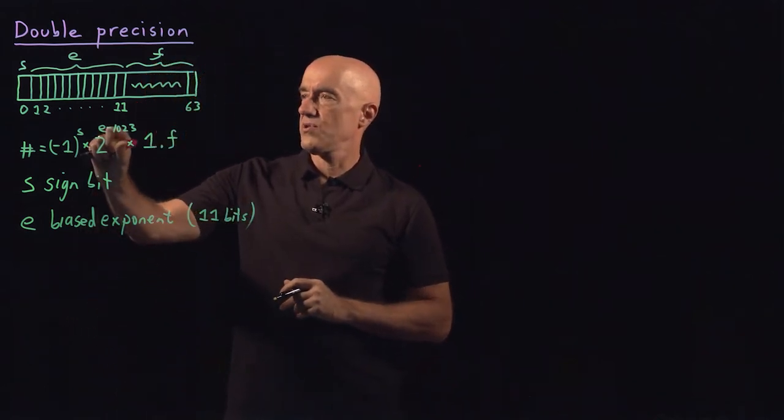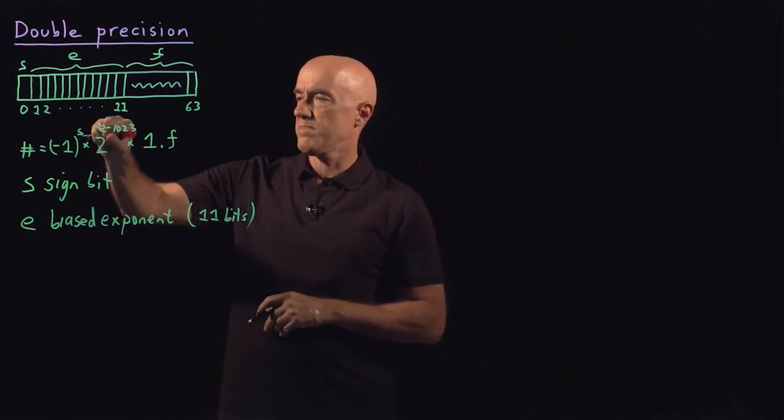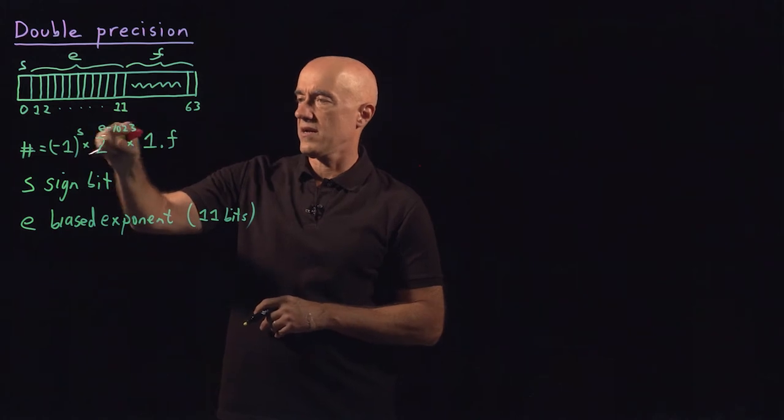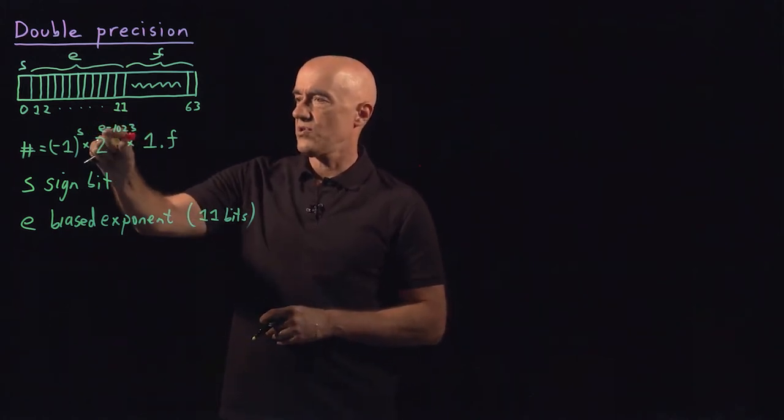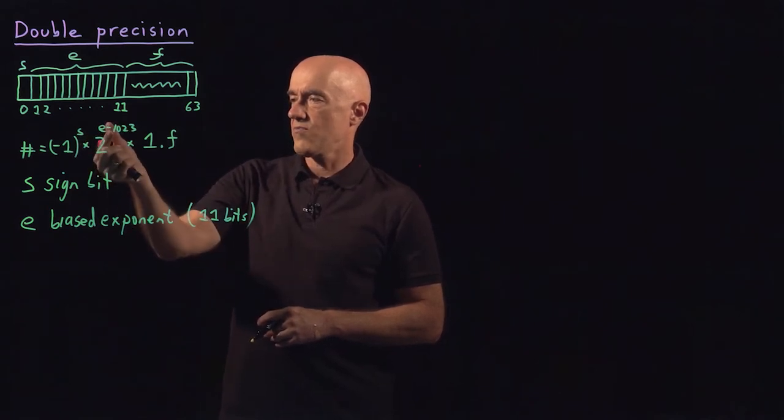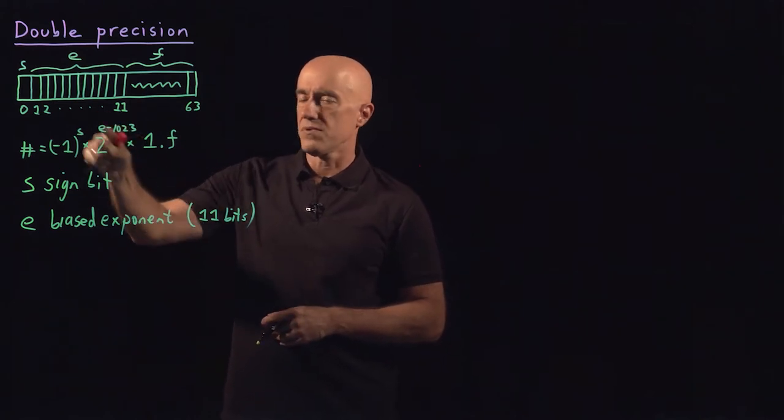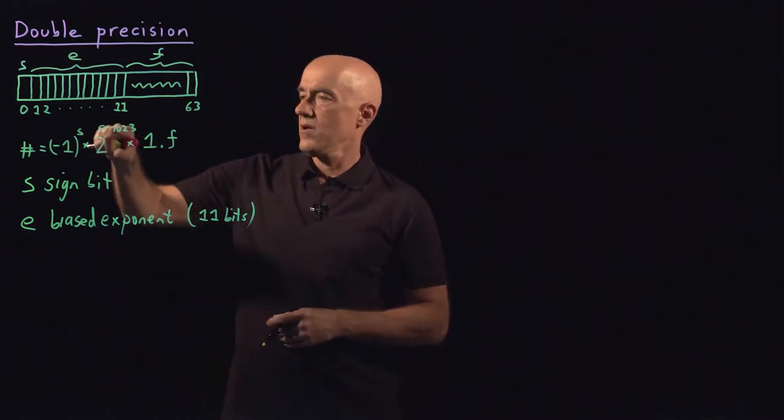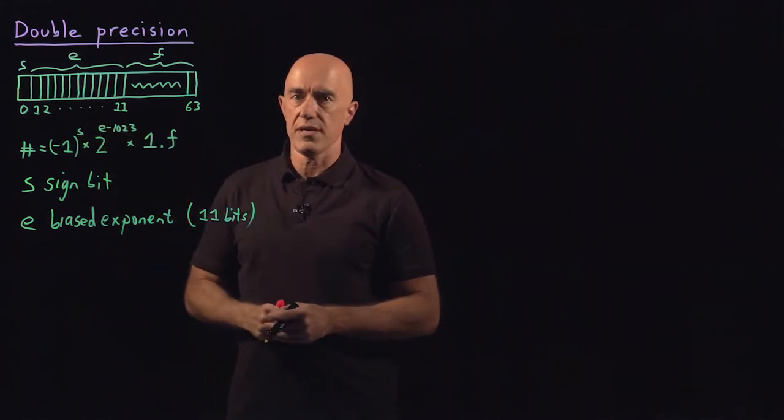So that gives you a range of very large numbers. It's biased because we're subtracting 1,023 in decimal here. So it gives you a range of very large numbers where the exponent is positive, and very small numbers close to zero where the exponent E minus 1,023 is negative.